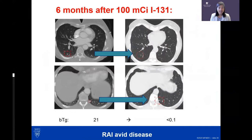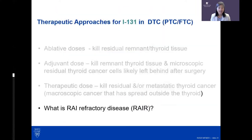Her follow-up scan six months later showed the nodules had essentially resolved, and her tumor marker became undetectable. This is the definition of radioiodine avid disease. Patients who respond this favorably have an excellent outcome.